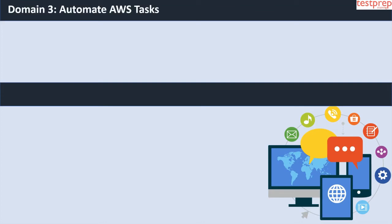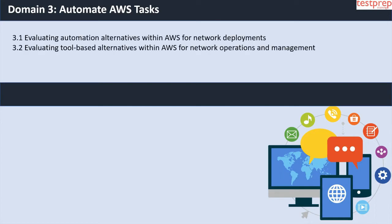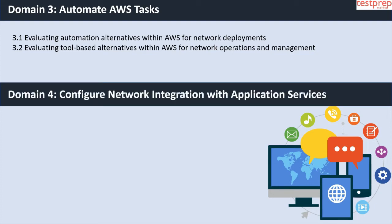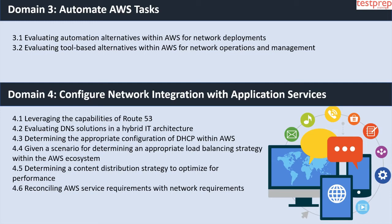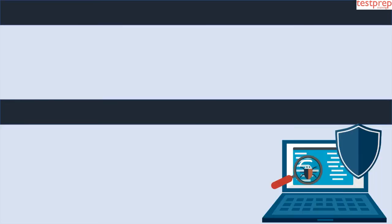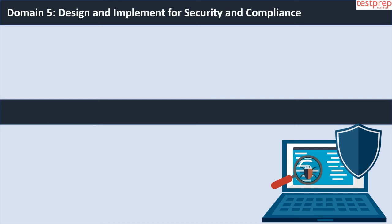Domain 3: Automate AWS Tasks — it contains two subtopics: first, evaluating automation alternatives within AWS for network deployments; second, evaluating tool-based alternatives within AWS for network operations and management. Domain 4: Configure Network Integration with Application Services — it contains six subtopics: first, leveraging the capabilities of Route 53; second, evaluating DNS solutions in a hybrid IT architecture; third, determining the appropriate configuration of DHCP within AWS; fourth, given a scenario, determining an appropriate load balancing strategy within the AWS ecosystem; fifth, determining a content distribution strategy to optimize for performance.